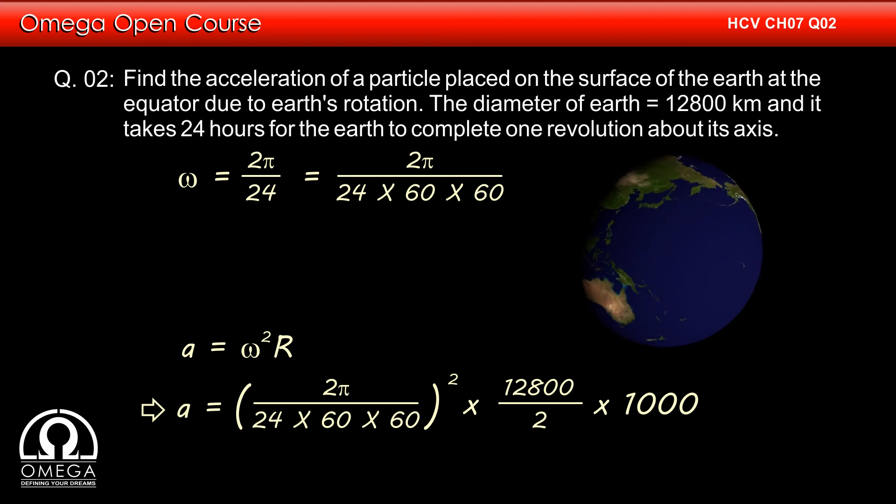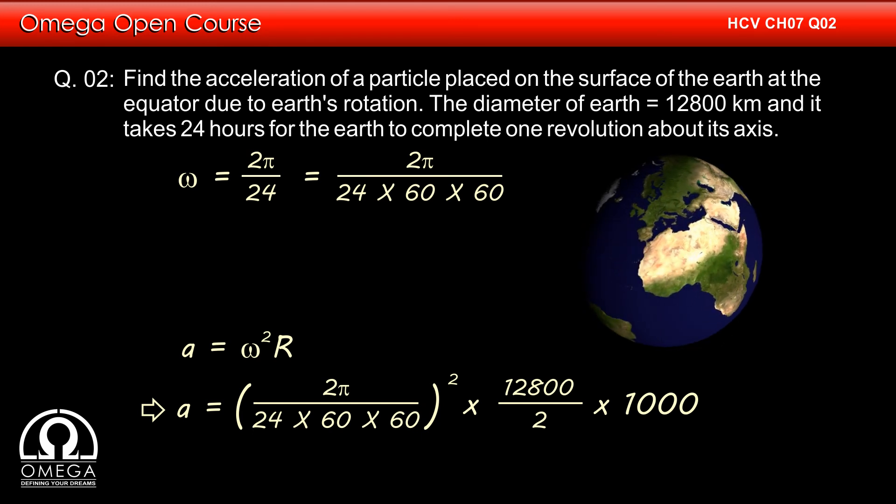Here, 12,800/2 is the radius of the Earth in kilometers. To convert it to meters, we multiply by 1000.